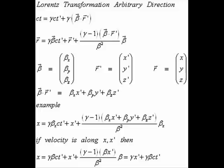The beta pseudo-vector means this set of three elements: beta x, beta y, and beta z. R' means this set of three elements: x prime, y prime, and z prime. R means this set of three elements: x, y, and z. And what I mean by the inner product — for example, beta dot r' — is defined by beta x times x prime, plus beta y times y prime, plus beta z times z prime.